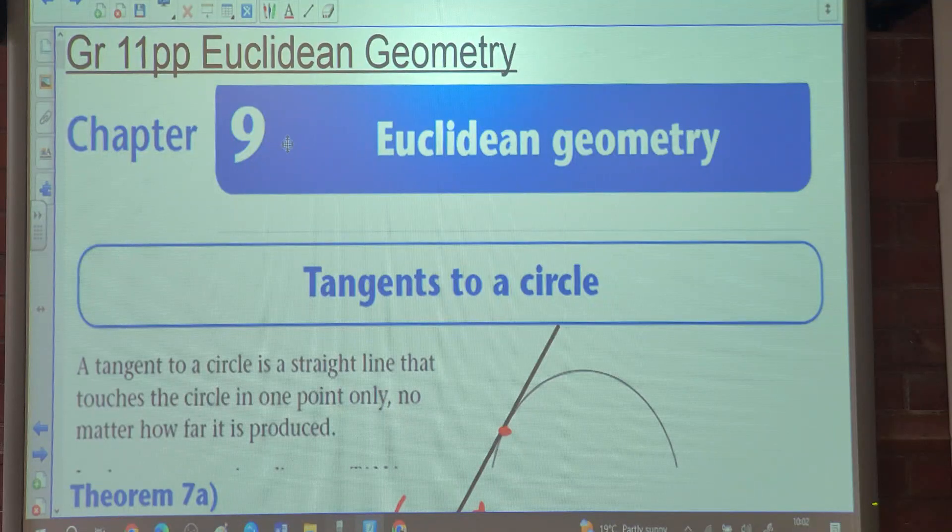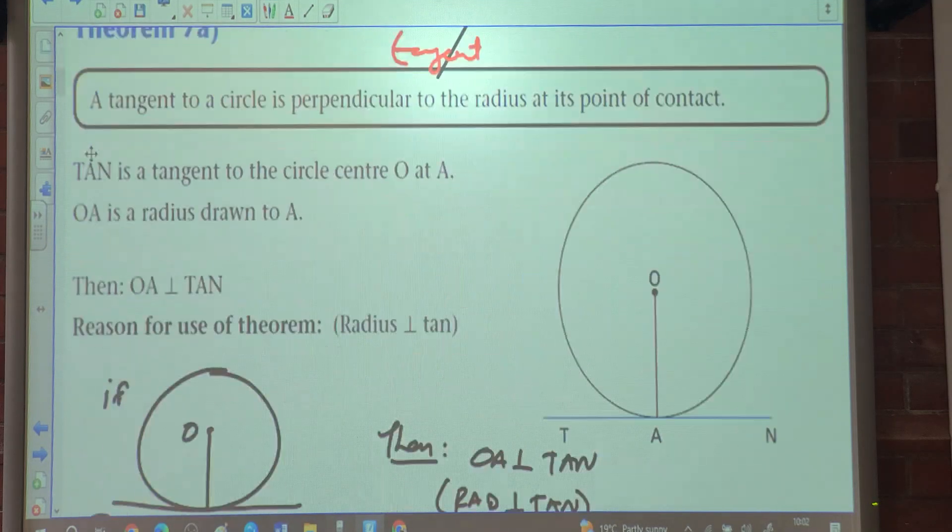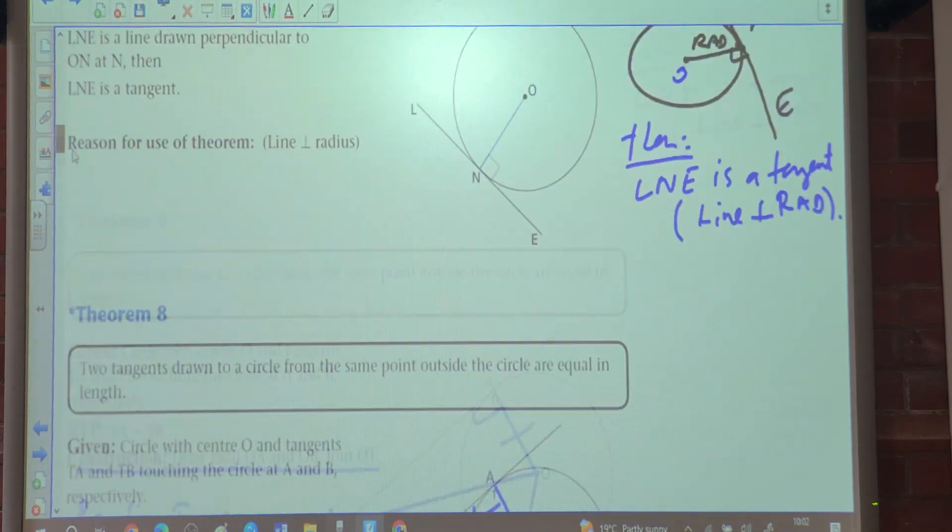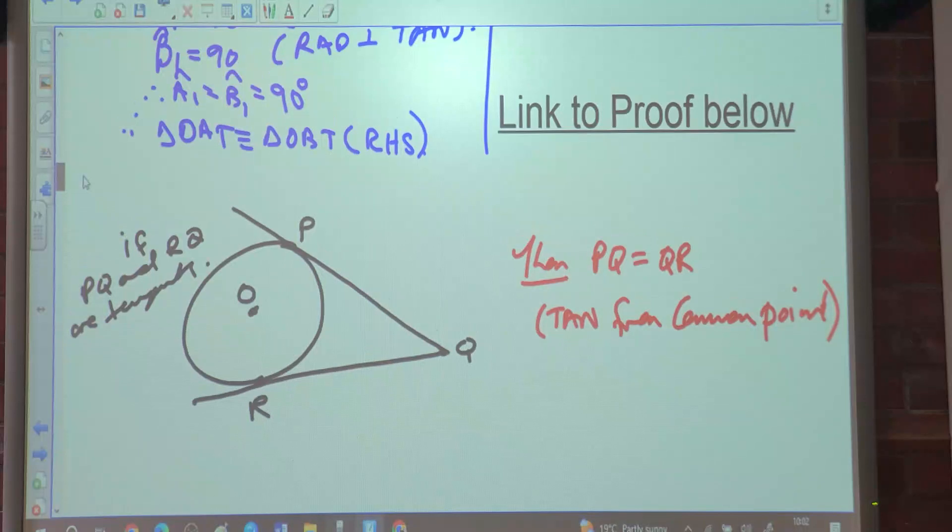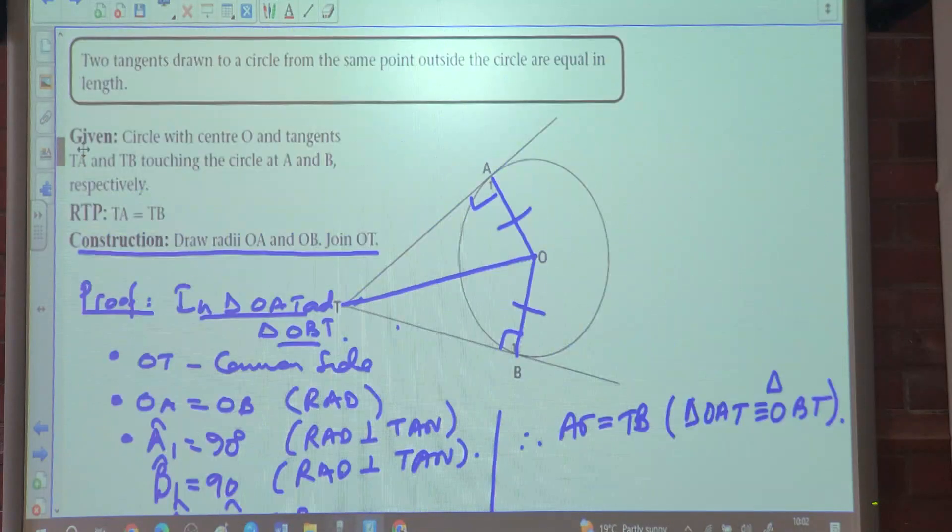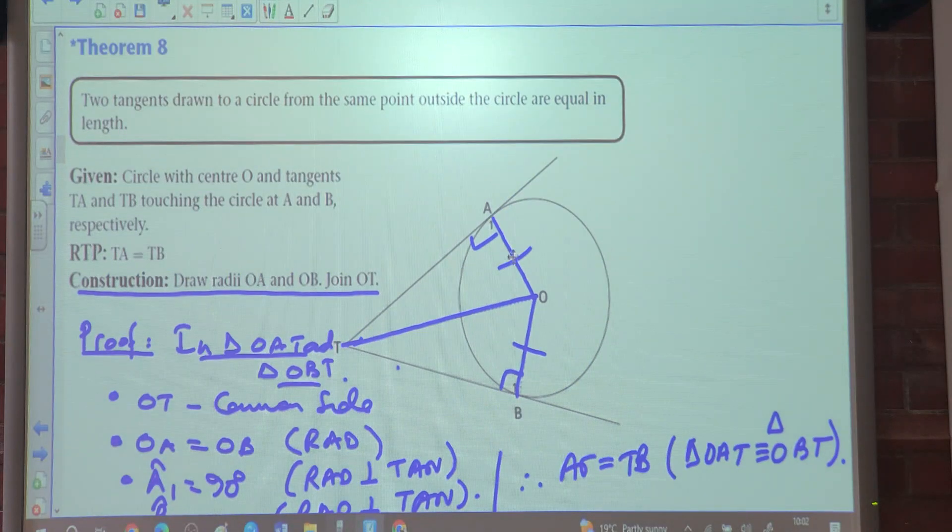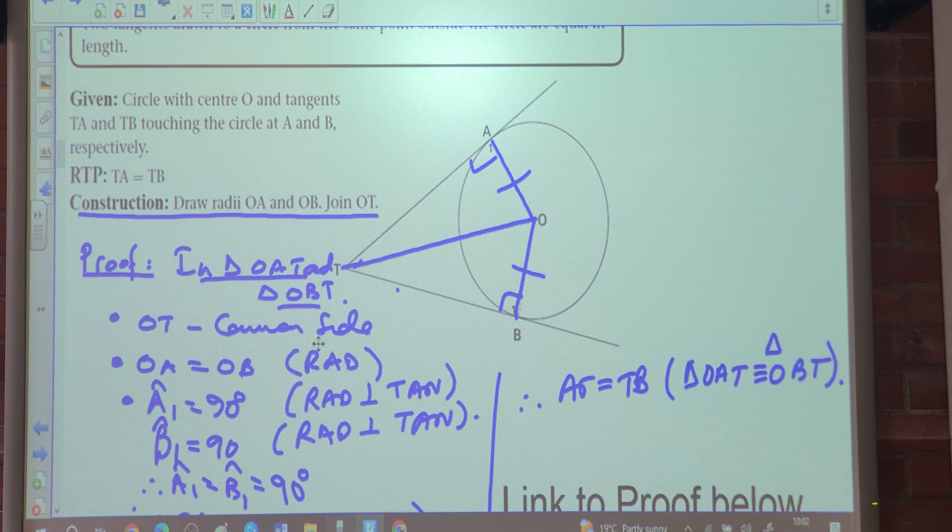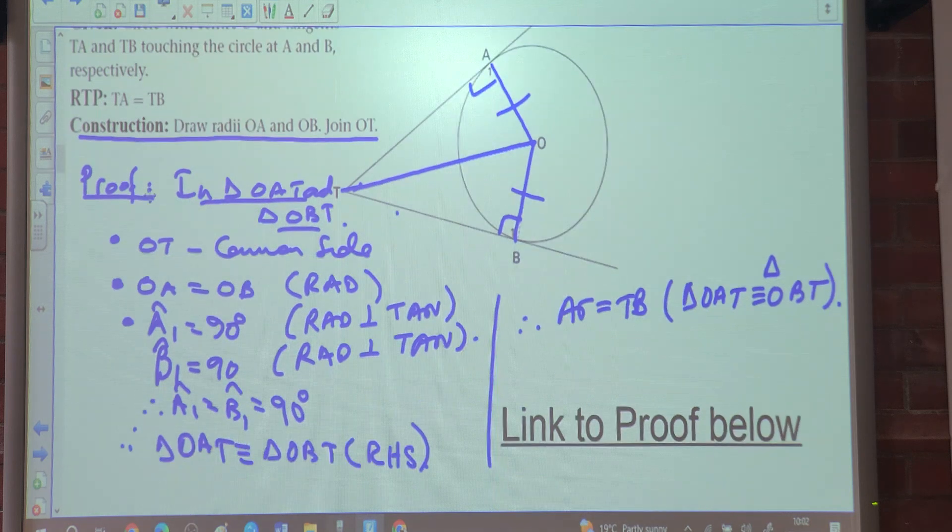Okay, good morning class. So today we're looking at Euclidean geometry. At this point we have proven the theorem that states two tangents drawn from the same point outside the circle are equal length. In other words, AT is equal to TB or BT. We've proven that formula.